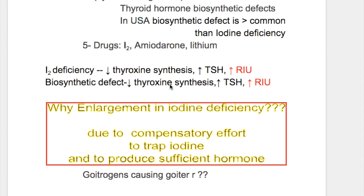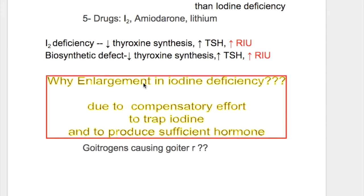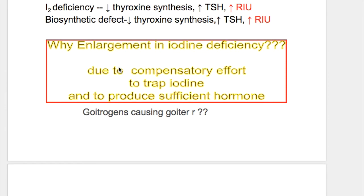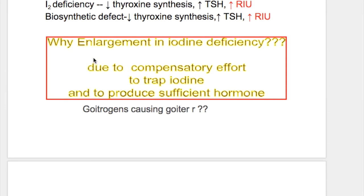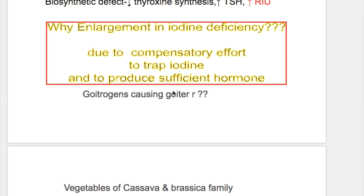Both iodine deficiency and biosynthetic defect cause decreased thyroxine synthesis, increased TSH, and increased radioiodine uptake. Enlargement of the thyroid gland in iodine deficiency is due to a compensatory effort to trap iodine and produce sufficient hormone.